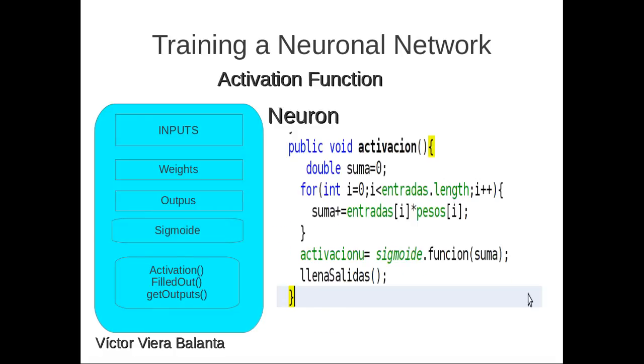The basic neuron has inputs, weights, output, sigmoid function, and activation function. This is the activation function. This is the input and weights.